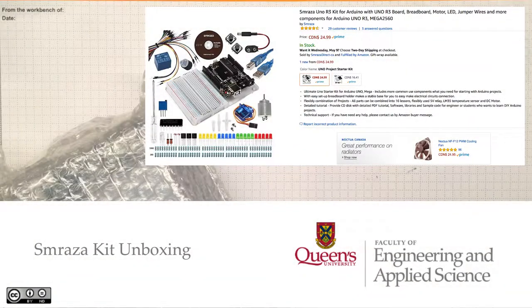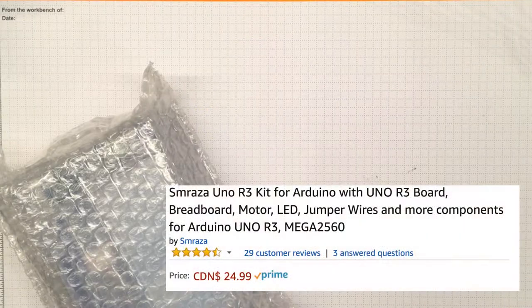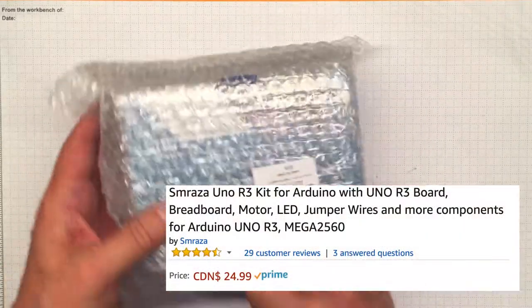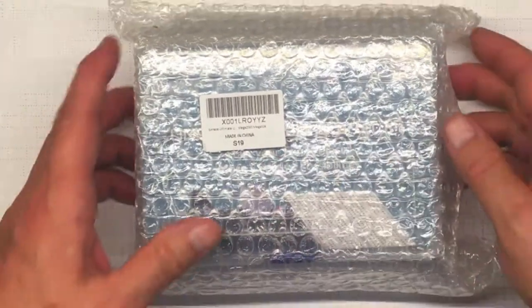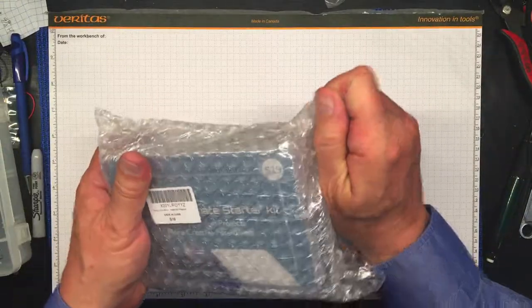This is a kit I got from Amazon for $25 on Prime with free shipping, and it's got everything you need for the course. It originally comes from China but ships in about two days to my address here in Kingston.